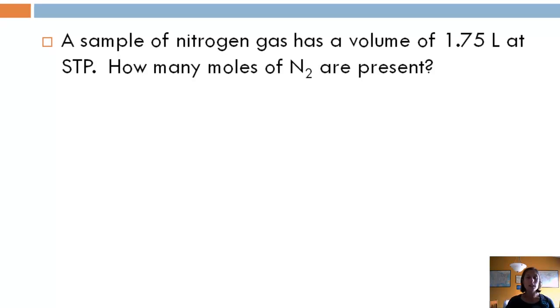So let's look at an example. A sample of nitrogen gas has a volume of 1.75 liters at STP. So that means my temperature is 0 Celsius, or 273 Kelvin, and my pressure is 1 atmosphere. And we want to know how many moles.